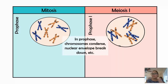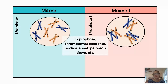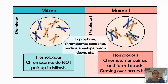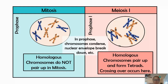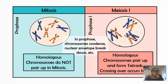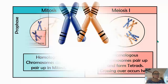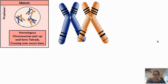In prophase in both meiosis and mitosis, the nuclear envelope breaks down and the chromosomes condense — everything that happens in prophase still happens. But a major difference is that in mitosis there are no pairs forming, whereas in meiosis one, in prophase one, there are homologous pairs that form tetrads. This is also where crossing over happens, so this is a pretty important step in meiosis.